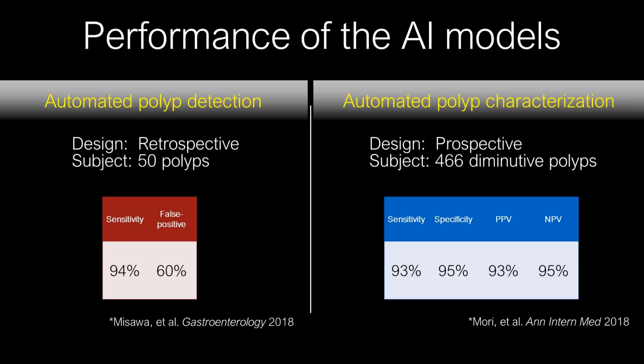When it comes to automated polyp characterization, we conducted a large-scale prospective study with real-time use of AI. The study revealed that the negative predictive value in identifying diminutive rectosigmoid adenomas was 95%, which exceeded the threshold required for optical biopsy.